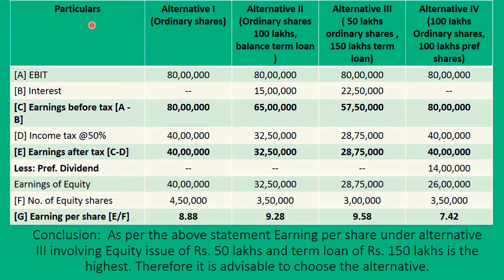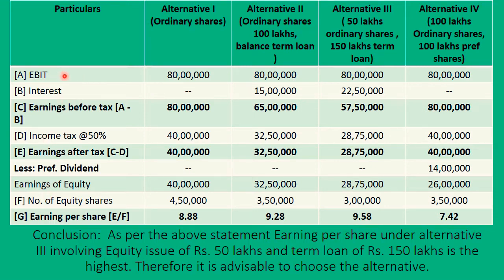Now let us go to the solution. We have made 5 columns: particulars, Alternative 1 (raising the whole 200 lakhs from ordinary shares), Alternative 2 (100 lakhs ordinary shares and 100 lakhs term loan at 15%), Alternative 3 (50 lakhs ordinary shares and 150 lakhs term loan), and Alternative 4 (100 lakhs ordinary shares and 100 lakhs preference shares). The first element is EBIT — earnings before interest and tax — which is given as 80 lakhs, and this is the same for all four options.